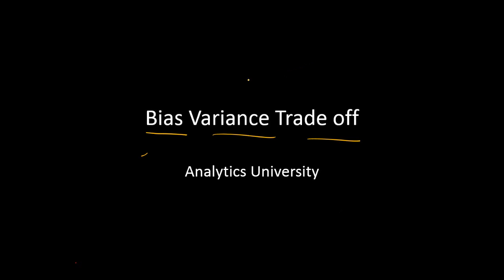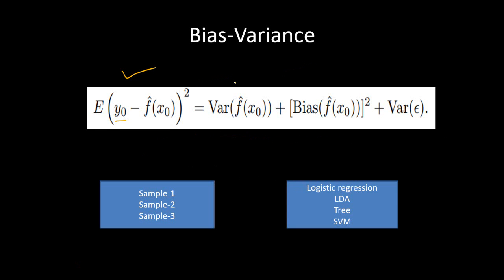In this video, I am going to talk about a very important topic in predictive modeling. The concept is known as the bias-variance trade-off. This is an important background for model validations. You might have heard about what is model validation — the reason why people do model validation is because of the bias-variance trade-off. Let us first try to understand what it is and why we need to do model validation because of this issue.